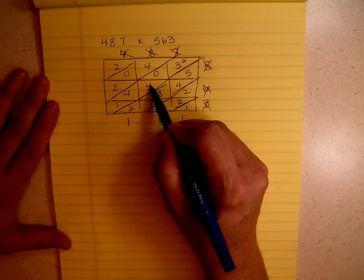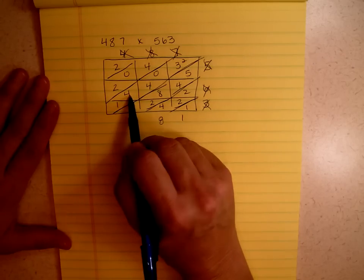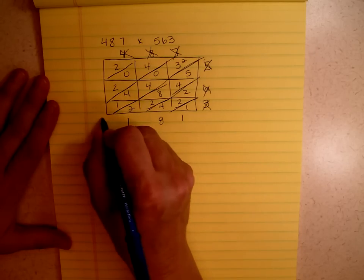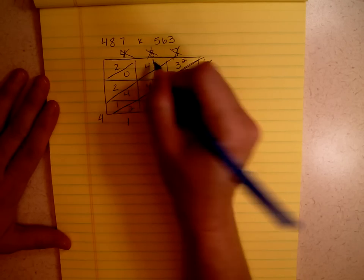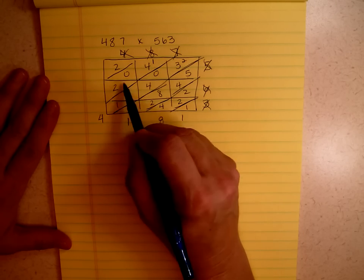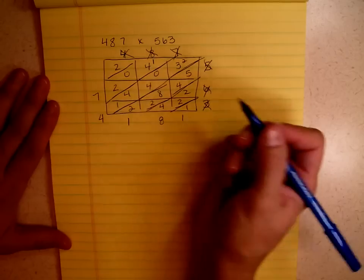2 plus 3 is 5. 5 plus 4 is 9. 9 plus 4 is 13. 13 plus 1 is 14. I'm going to put a little 1 up there. 1 plus 4 is 5. 5 plus 2 is 7. I'm going to bring my 2 there.